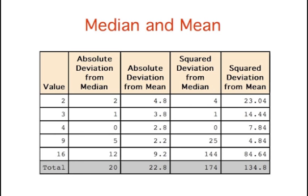By looking at the last row, you can see that the sum of absolute deviations from the median is smaller than the sum of absolute deviations from the mean. This will always be the case since median minimizes the sum of absolute deviations.